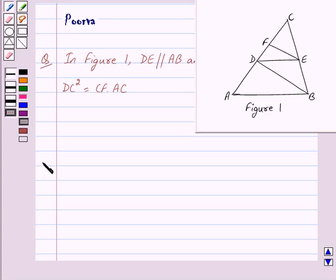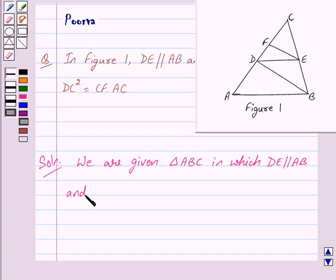Let us begin with the solution. We are given triangle ABC in which DE is parallel to AB and FE is parallel to DB. We have to prove that DC² equals CF times AC.